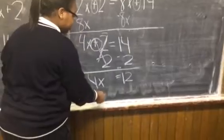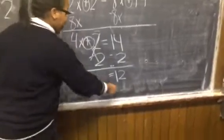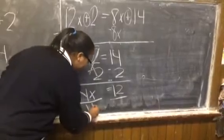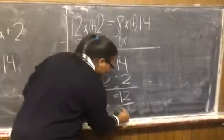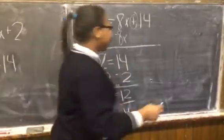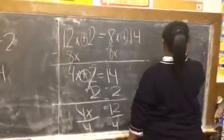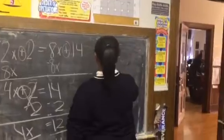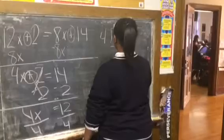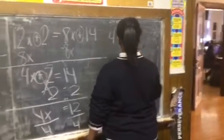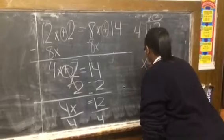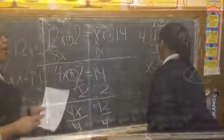Now you have to get the x by itself. So you divide by what? 4. Now 12 divided by 4 is what? 3. So that means your x is equal to 3.